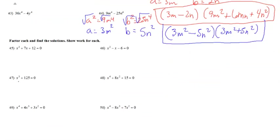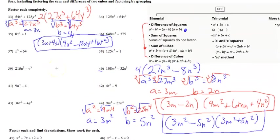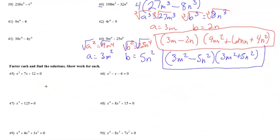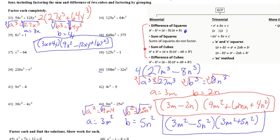Let's look at number 47: x³ + 125 = 0. We're going to solve this by factoring. This is a sum of cubes, so we'll use the sum of cubes formula. Make sure you write out these formulas. We have a³ = x³ and b³ = 125. Taking the cube root gives a = x and b = 5.